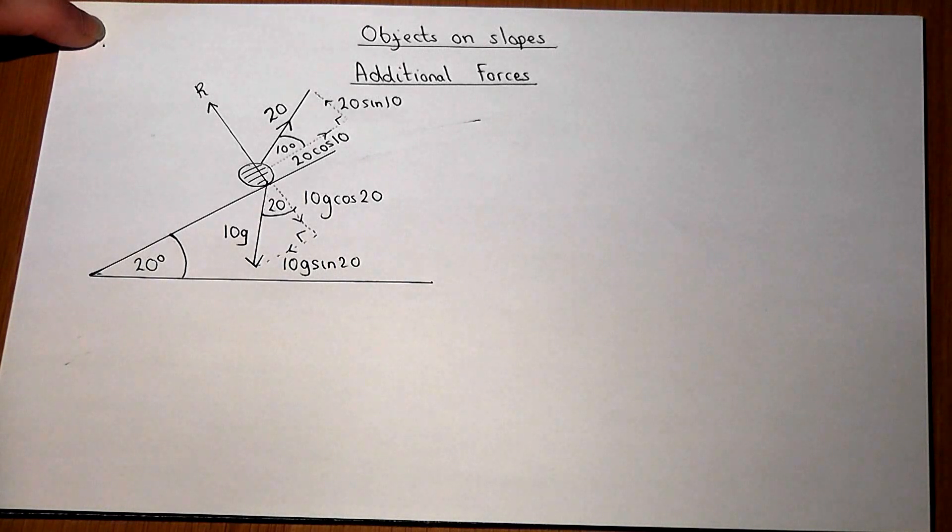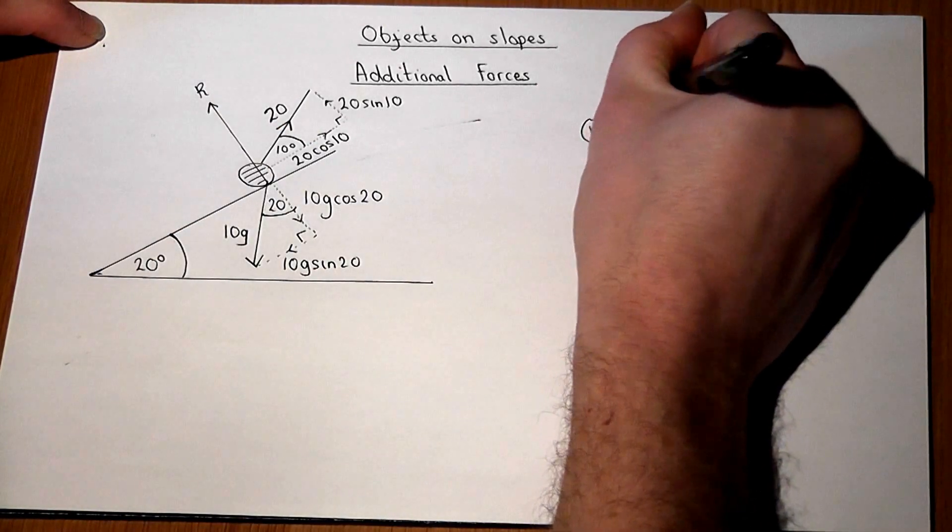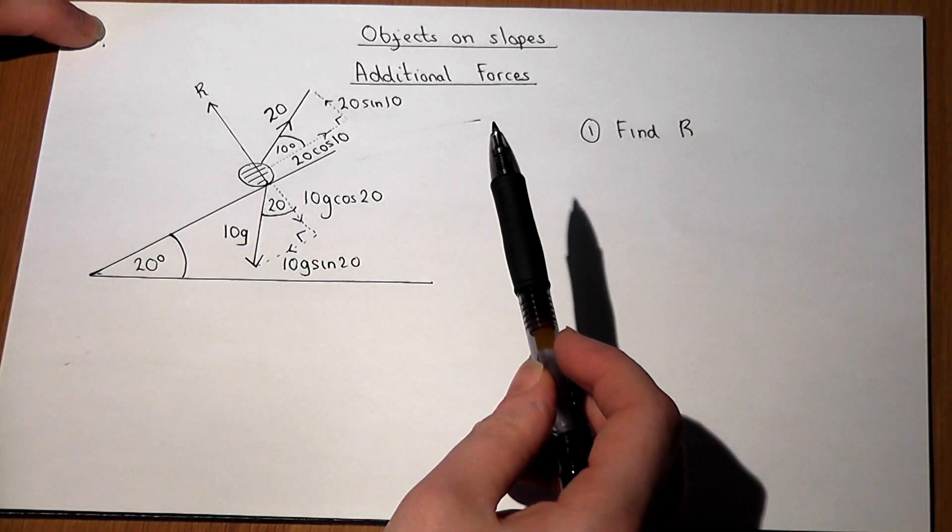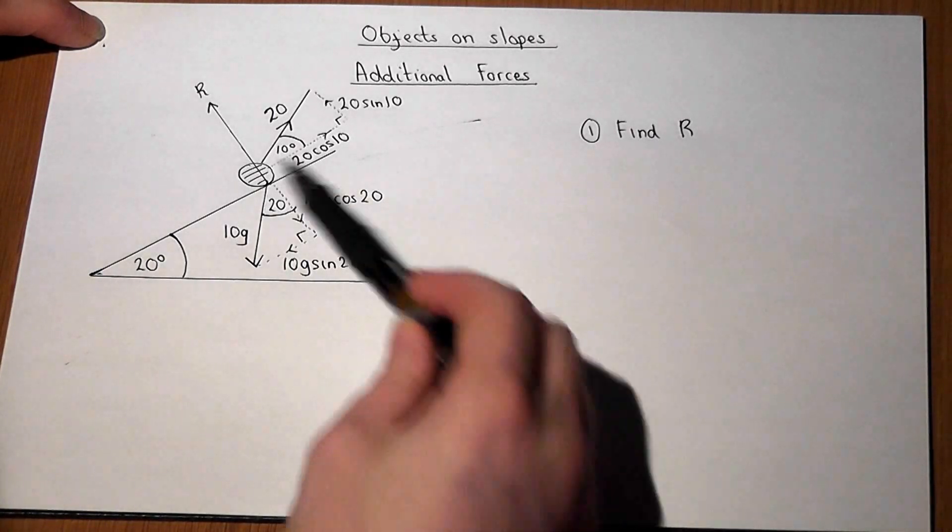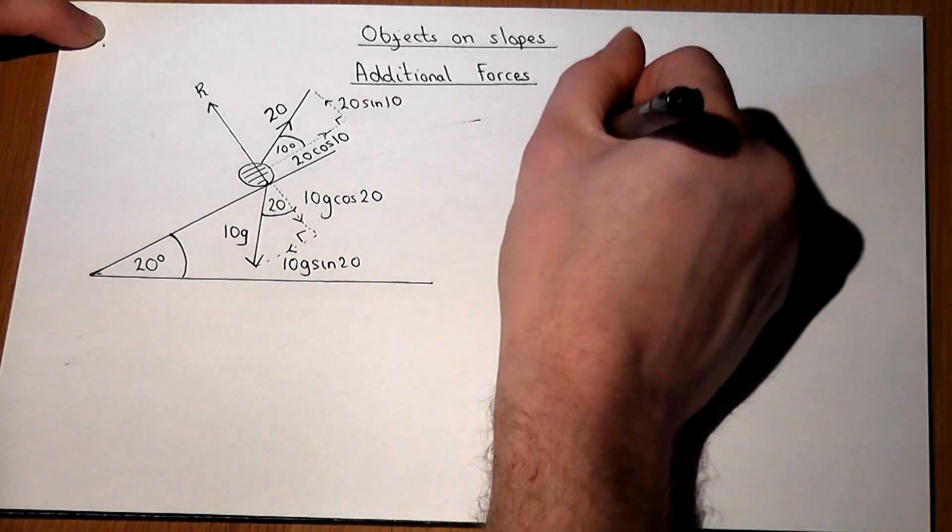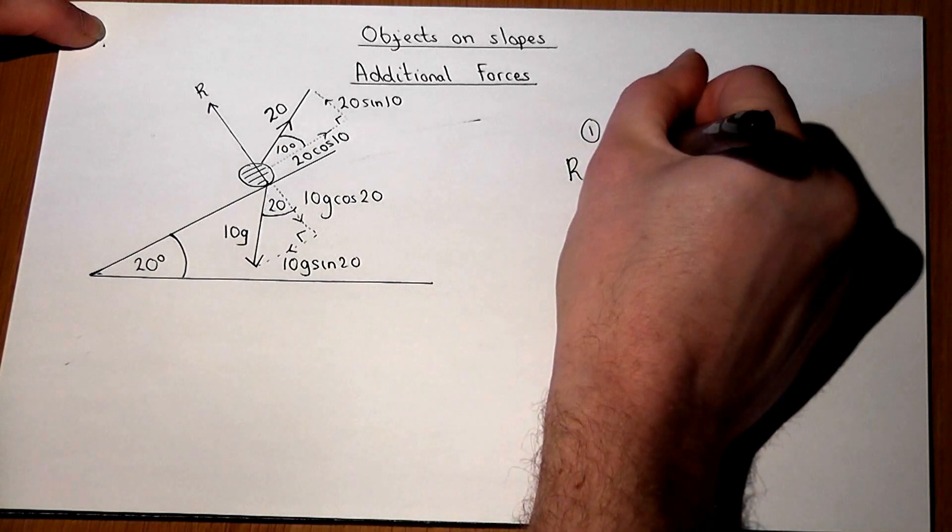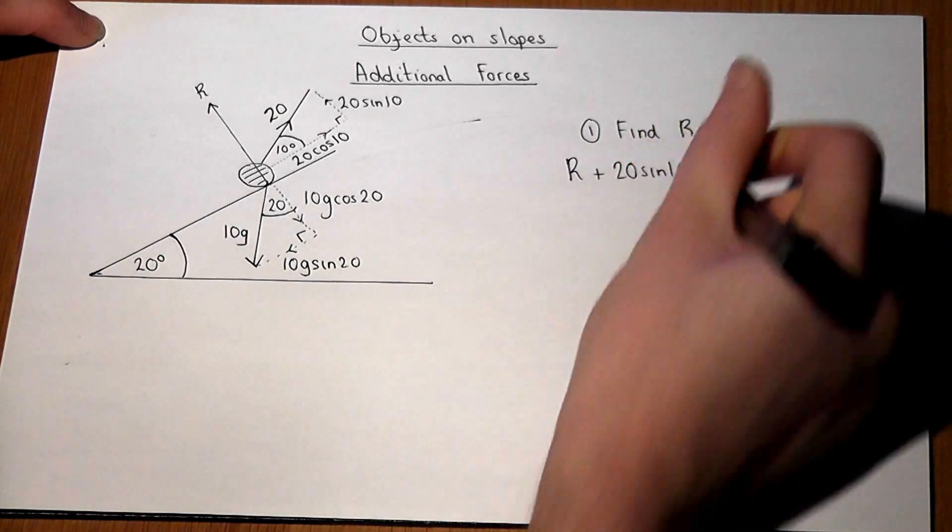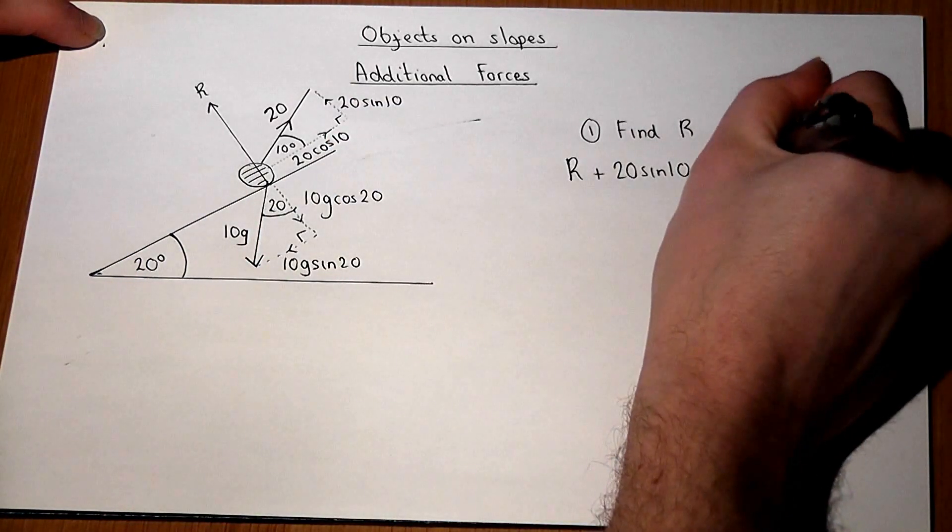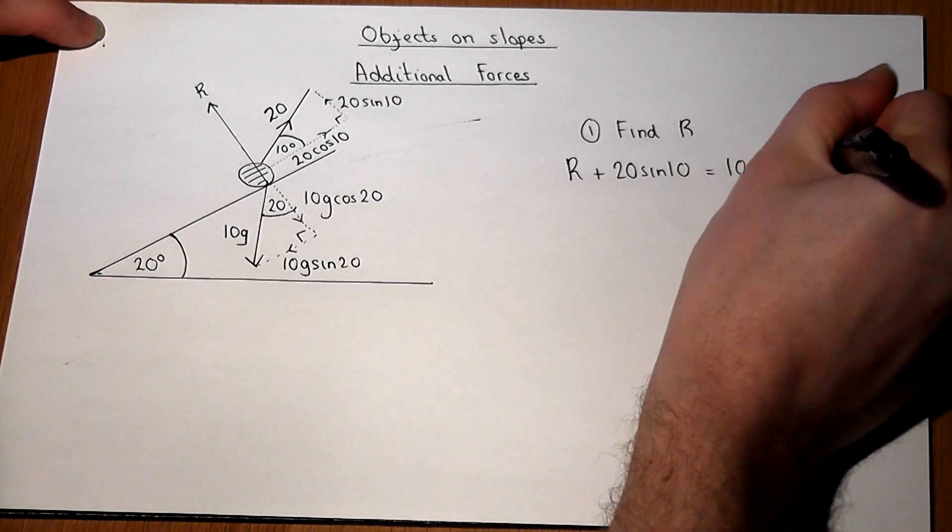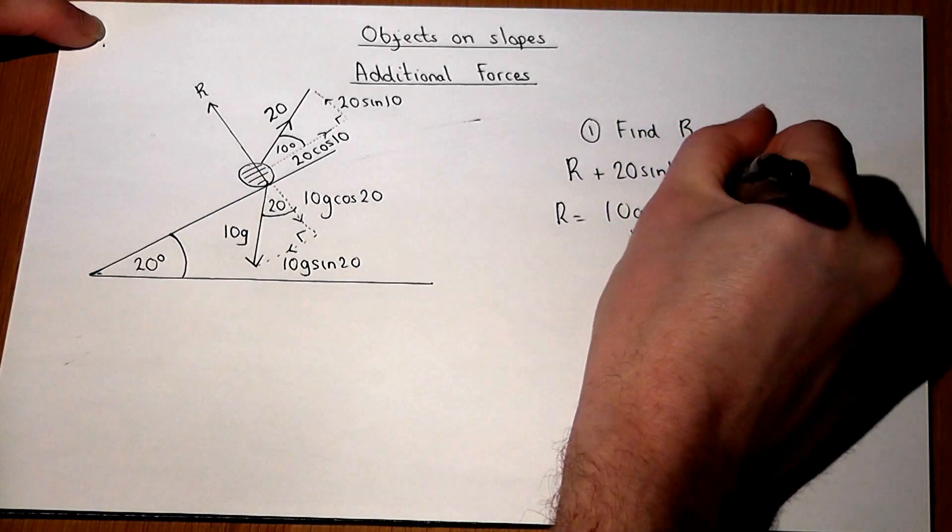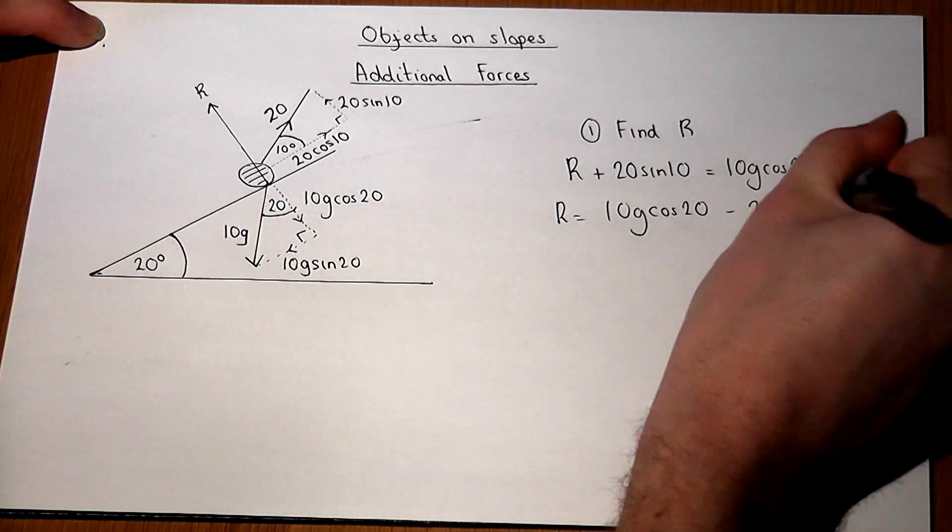Now, what we'll do first is find R. There are actually three forces acting at right angles to the slope: the R, the 20 sin 10, and the 10g cos 20. So basically, R plus 20 sin 10, these two forces here, must equal the 10g cos 20. So R must equal 10g cos 20 minus the 20 sin 10.